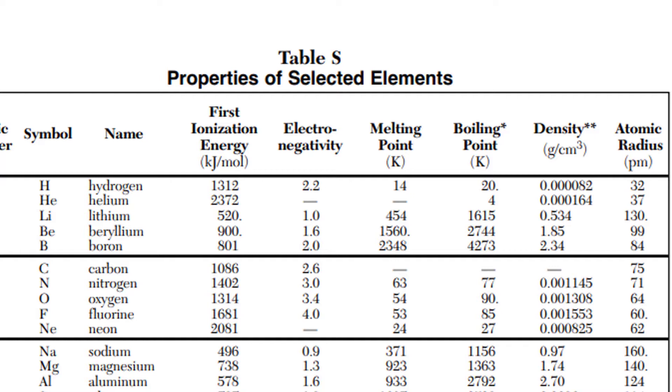If we go up to lithium, our next element, element atomic number three, and we look, what is its atomic radius? The atomic radius of lithium is going to be 130 picometers. That's quite a jump.